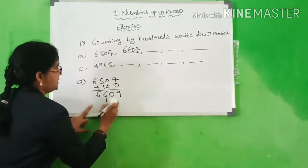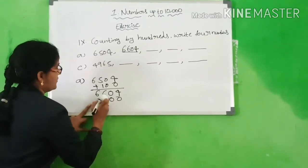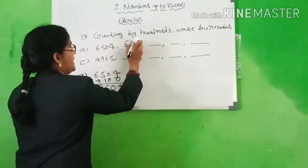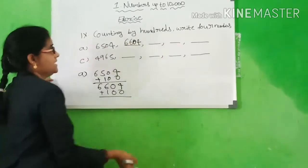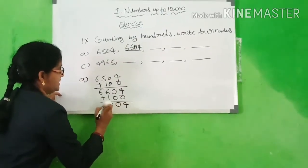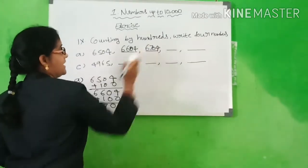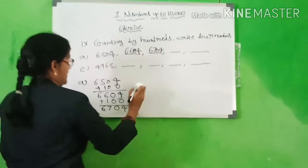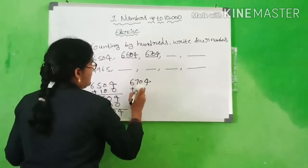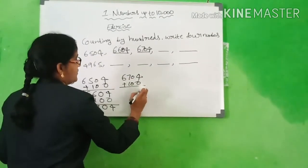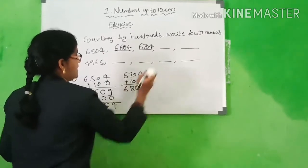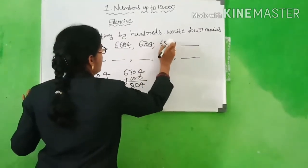Next, you have to count these numbers per 100. We will get: 4, 0, 7, 6 — we get 6,704. Next, we have to count 100 more: 4, 0, 7 plus 1 is 8, 6 — we get 6,804.